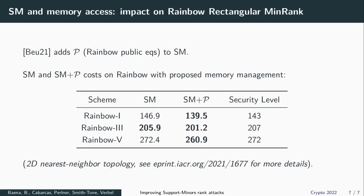For our second contribution, we present its impact on the rectangular min-rank attack on Rainbow. In this case, there are also some extra equations which depend on the Rainbow public key which are added to the support miner system. We present the cost of this attack on Rainbow parameters, and contrary to previous estimations which don't take the structure into account, we show that this attack may indeed reduce the security of the scheme.